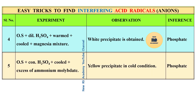The fifth test: original solution plus concentrated sulfuric acid, then cooled, then add excess of ammonium molybdate. If a yellow precipitate forms in cold condition, that is phosphate.